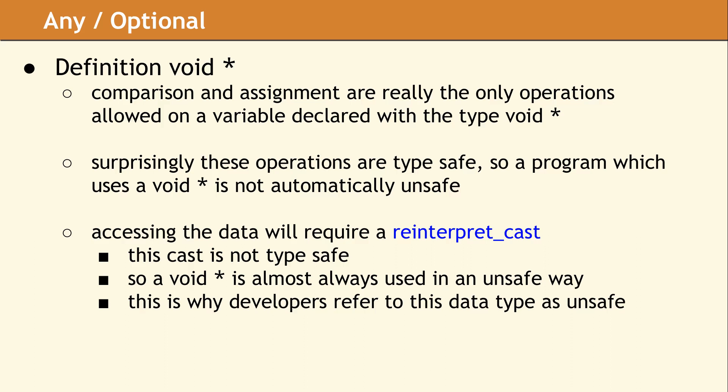This is surprising to many programmers, since void star is considered to be very unsafe. The unsafe step occurs when you want to access the data in the void star. Since you cannot dereference a void star, you must use a reinterpret cast to convert the type to a specific pointer type before accessing the data.